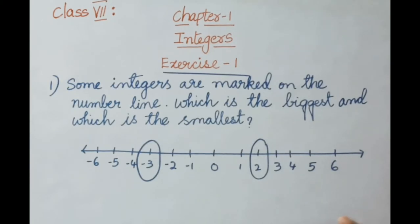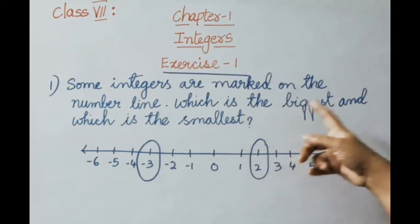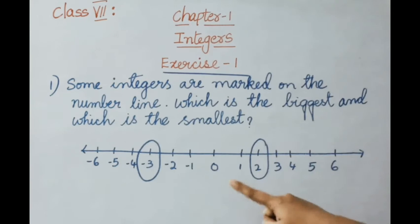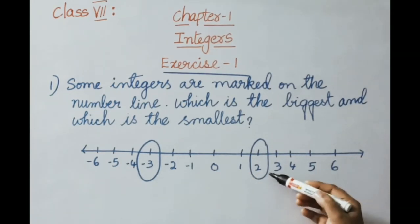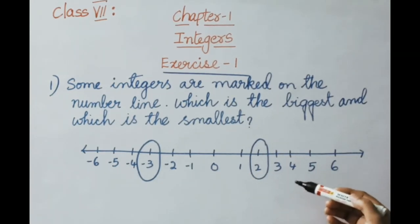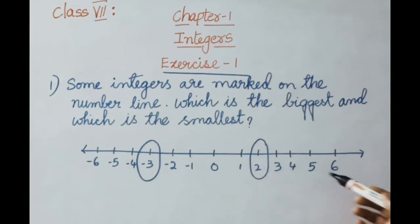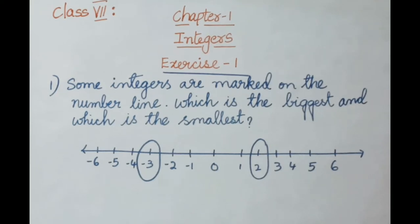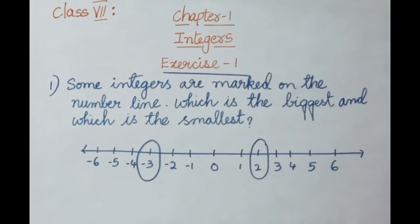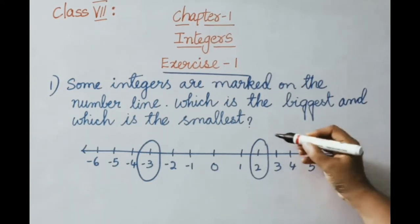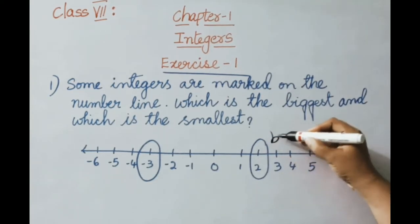See the first sum now. Some integers are marked on the number line. Here 2 is the biggest integer. Because positive numbers are bigger integers compared to negative integers. Here they marked 2 and minus 3. So, 2 is a positive integer — that's why it is the biggest integer.